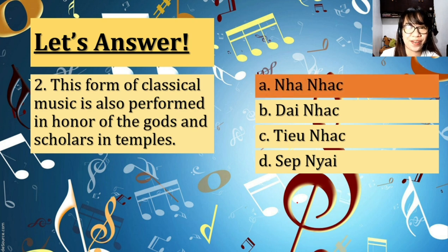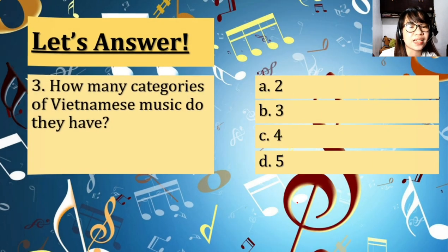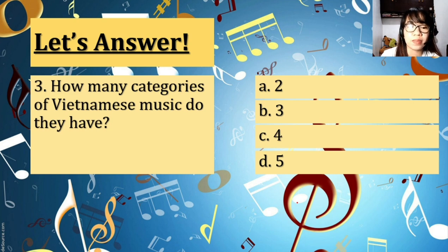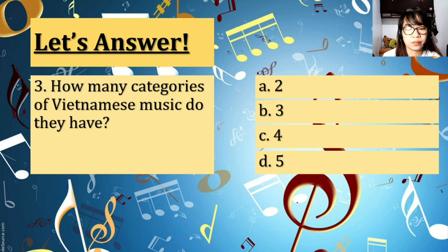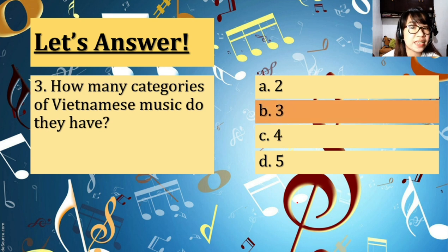If your answer is Nanak, then you are correct! Number three: How many categories of Vietnamese music do they have? Two, three, four, or five? If your answer is three, then you are correct! Who got three out of three? Congratulations!